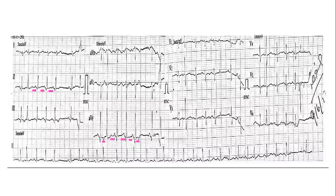Obviously we are seeing these ECGs. So you are right — he's having atrial ectopics. These are ectopics. And when these happen there is irregularity. You see that over here — this came and the R came earlier. Over here this came, there was a pause.